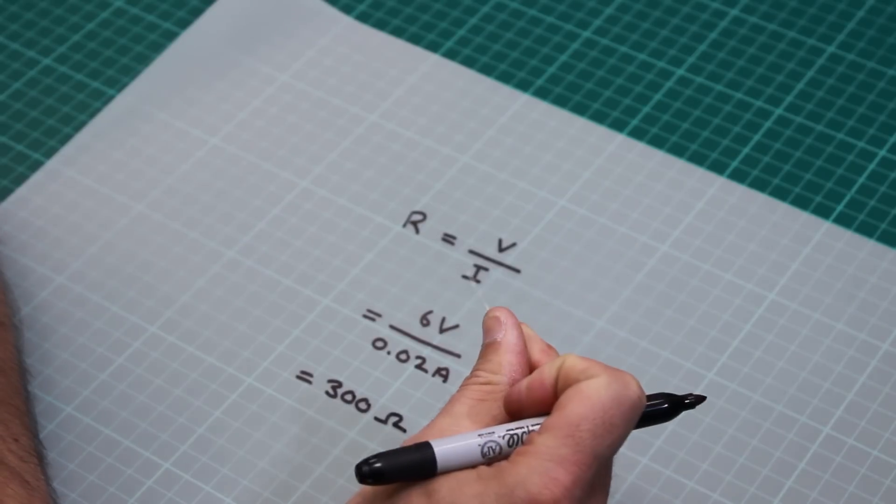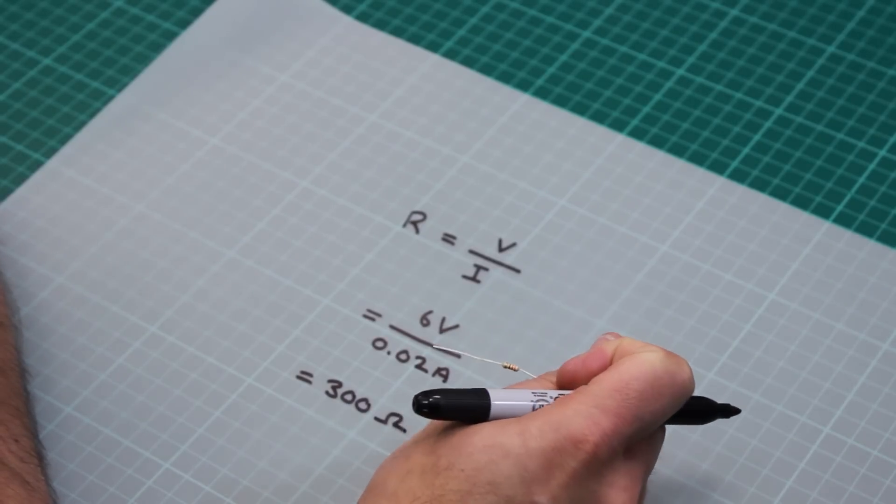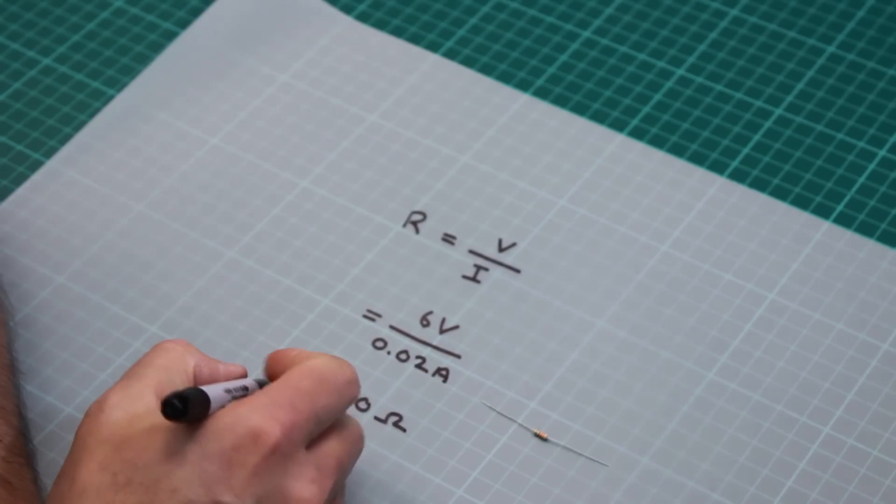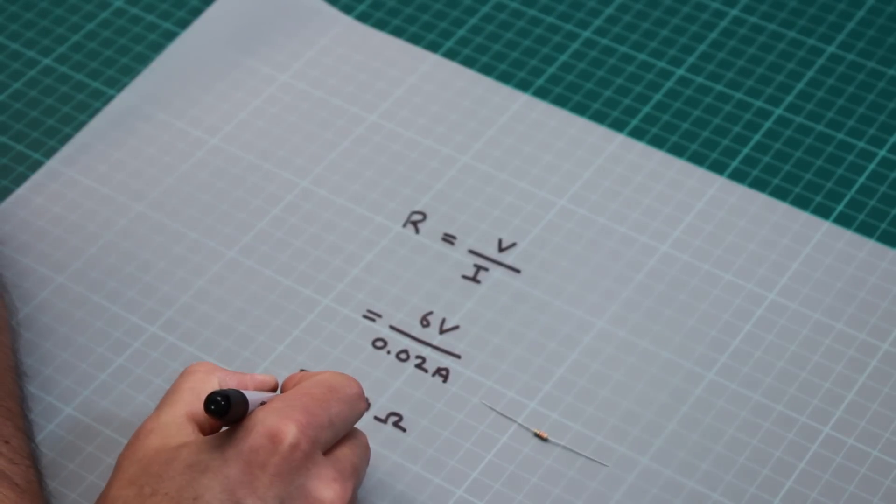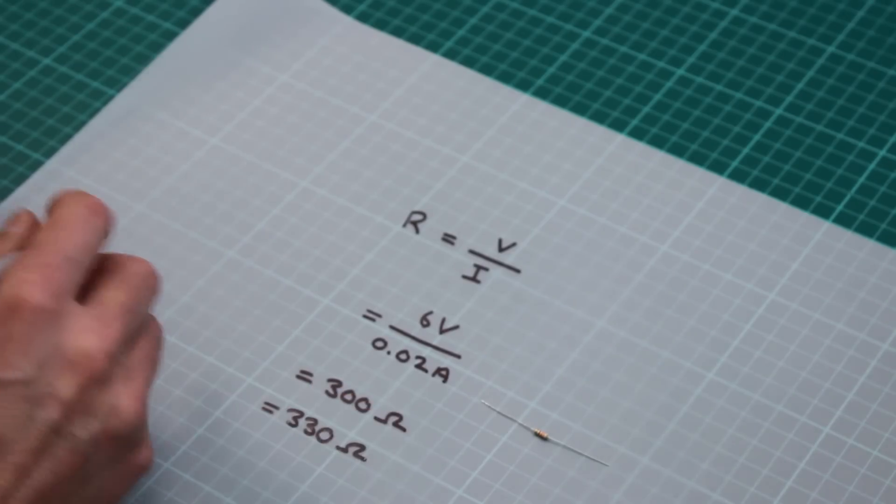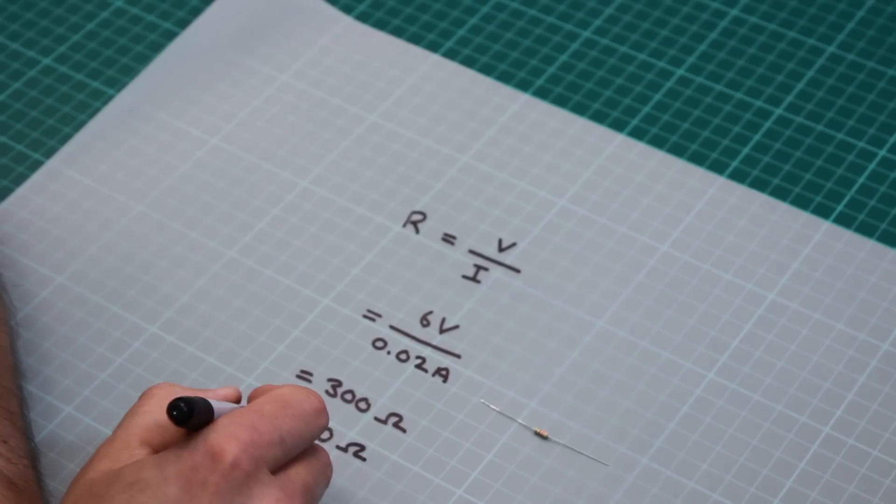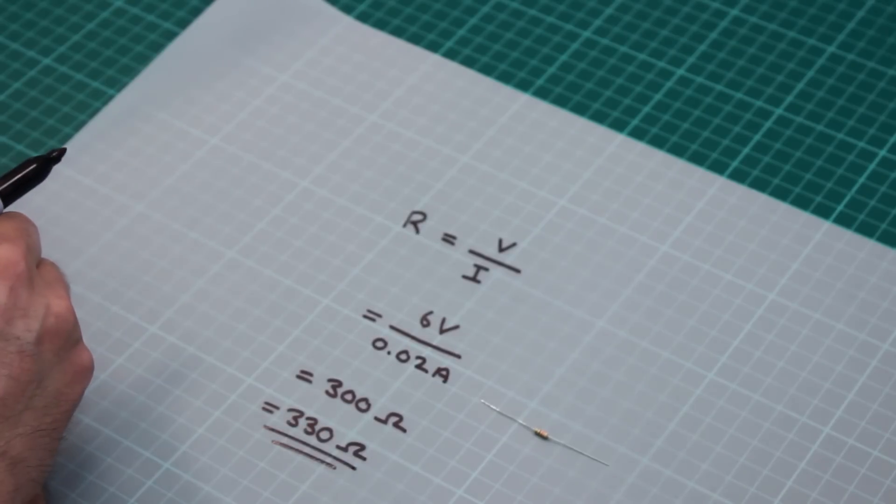Now resistors, unfortunately, aren't available in every single value we might want to have. This resistor is actually 330 Ohms. This is because it's the nearest available value that's manufactured to 300 Ohms and that is what we're using in our circuit.